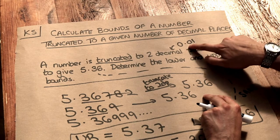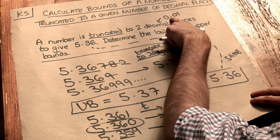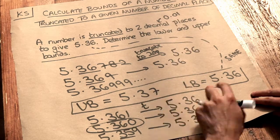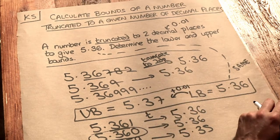So all we do to get the upper bound is we add this accuracy to the number. So we add the accuracy, and that gives us the upper bound.